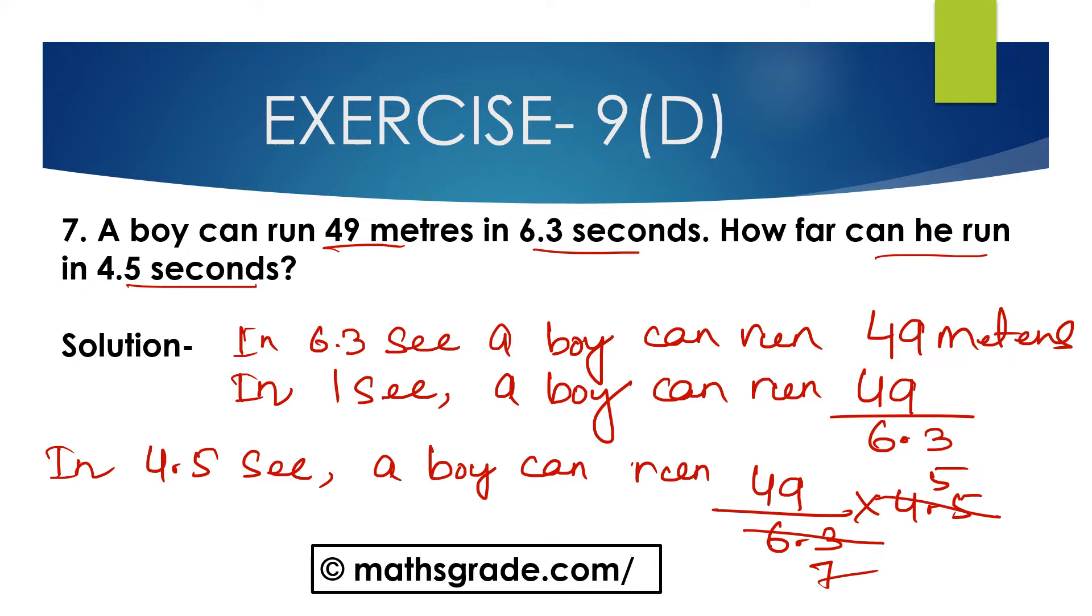Now cancelling 6.3 and 4.5 with 0.9. 0.9 multiplied with 7 is 6.3 and 0.9 multiplied with 5 is 4.5. Now cancelling 7, if 49 is 7×7, then 7 multiplied by 5 is 35. 35 meters. So 35 meters is the answer. A boy can run 35 meters in 4.5 seconds.